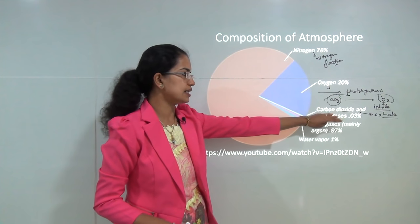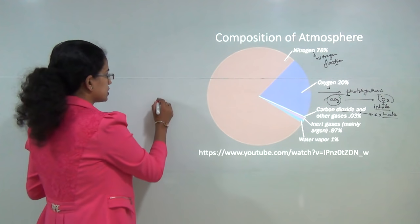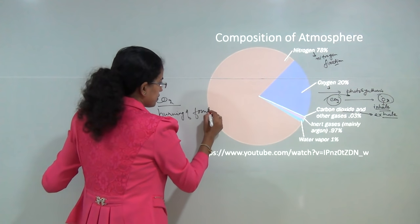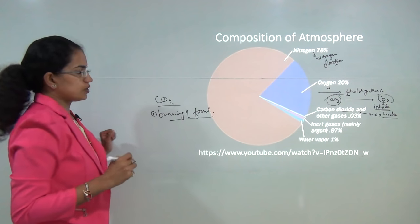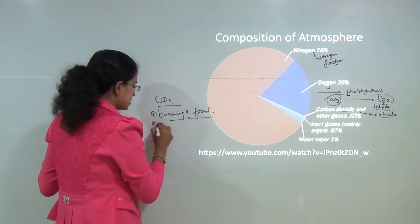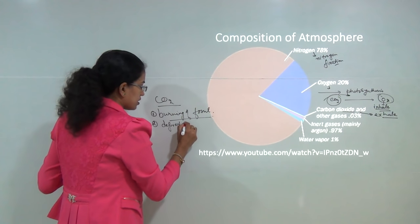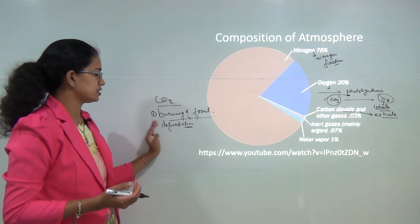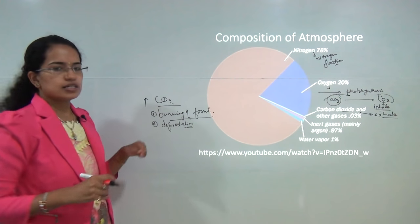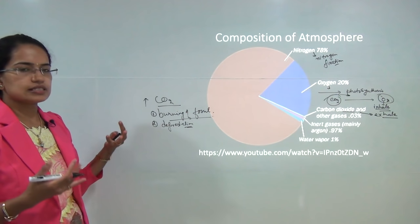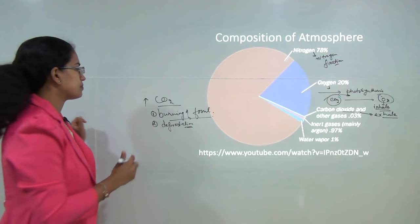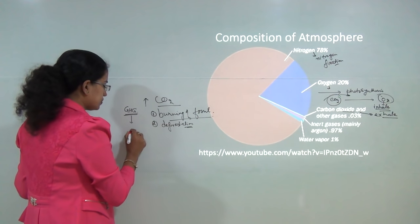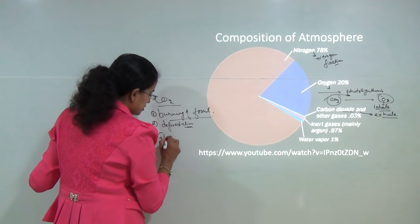Besides this, there are other sources which release carbon dioxide into the atmosphere. For example, burning of fossil fuels releases carbon dioxide. Cutting of trees — deforestation — increases carbon dioxide concentration because there would be a decrease in the process of photosynthesis. All these processes lead to an increase in greenhouse gases, increasing the amount of heat trapped in the atmosphere — that is why these gases are known as greenhouse gases.